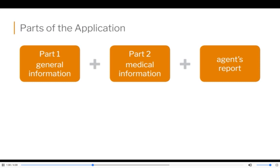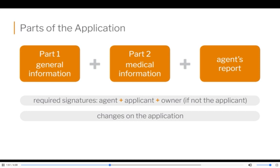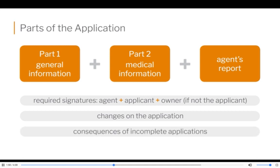Then part of that application is also a signature section. You always have to sign an application as the agent, and the applicant or owner of the policy has to sign as well. You cannot make any changes on an application once those signatures are in place. And you must make certain that everything is answered completely on an application, because if you skip something and send it in, the application will be returned and you'll have to get it answered. It just delays the whole process. Always make sure you review the paperwork for all signatures and all complete information.